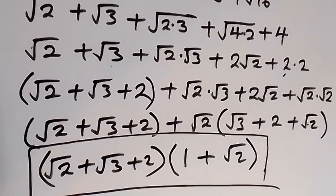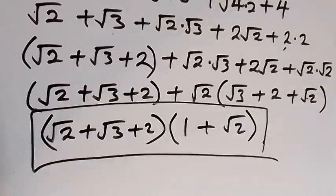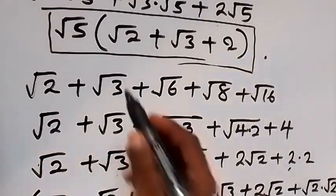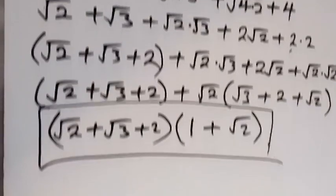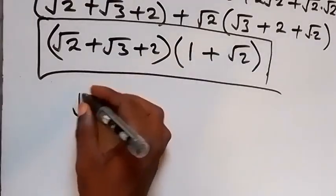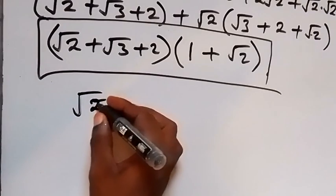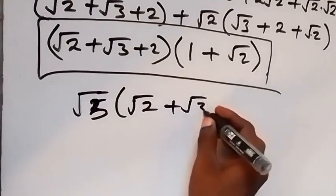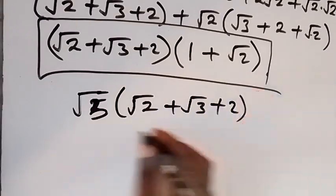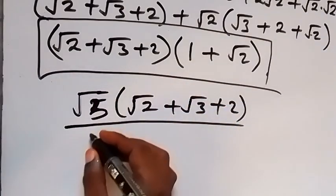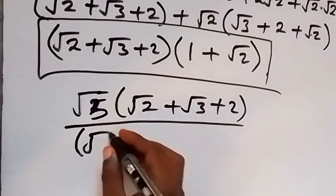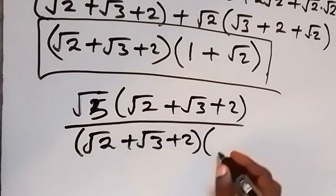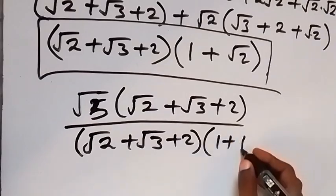Now we can bring the two together. The numerator is root 5 times bracket root 2 plus root 3 plus 2, and the denominator is bracket root 2 plus root 3 plus 2, times bracket 1 plus root 2.